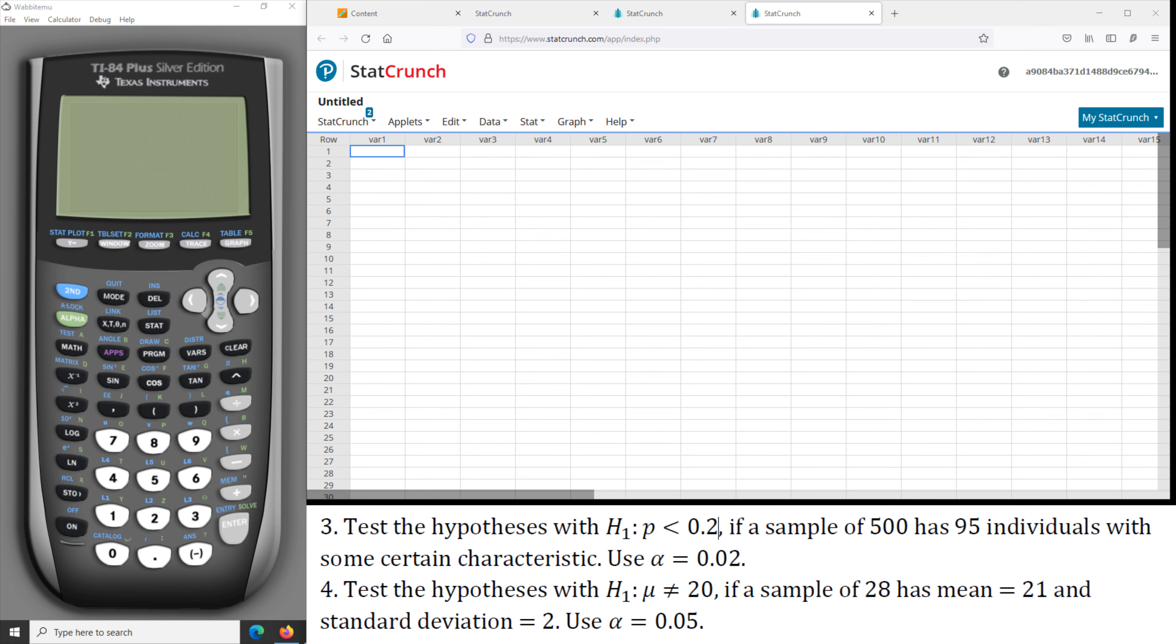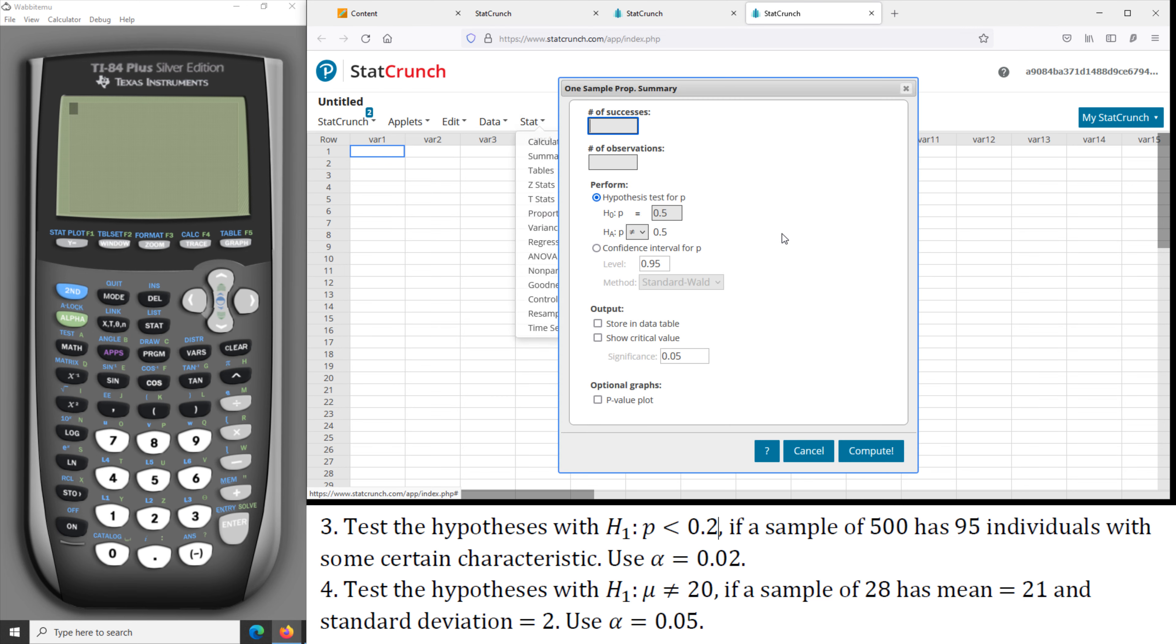So first if we use StatCrunch, go to Stat and Proportion, statistic proportion stat of one sample with summary. The number of successes is 95 individuals with some certain characteristic out of 500, and this is hypothesis that P less than 0.2. So first we enter 0.2 for the null hypothesis.